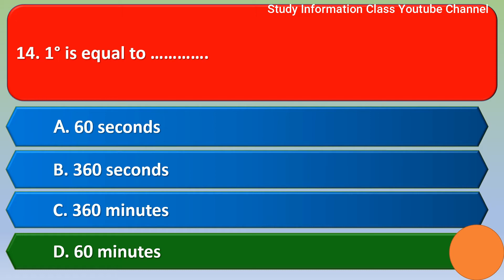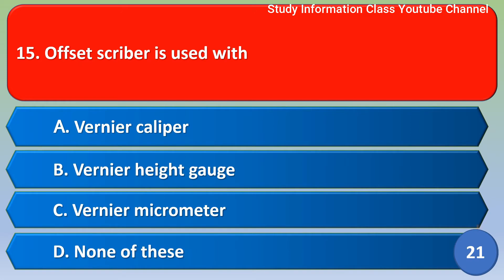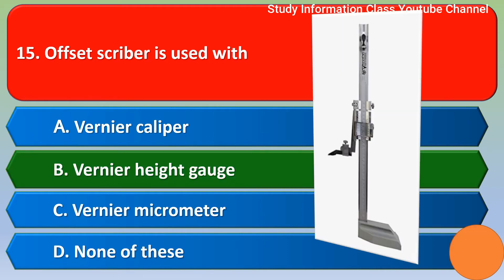Next question: offset scriber is used with — options: A) caliper, B) height gauge, C) micrometer, D) none of these. The correct answer is option B, height gauge.